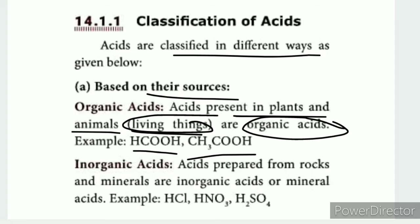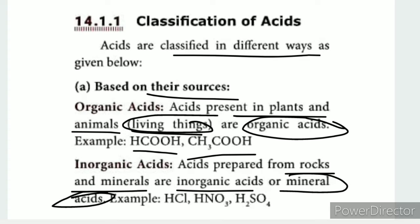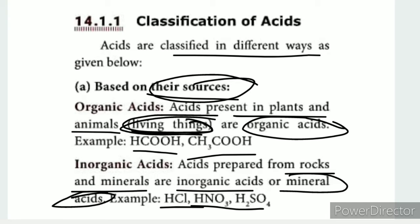The second source category is non-living things, such as rocks and minerals. These are called mineral acids. Examples include HCl, HNO3, and H2SO4. So the source classification gives us organic acids from living things and mineral acids from non-living things.